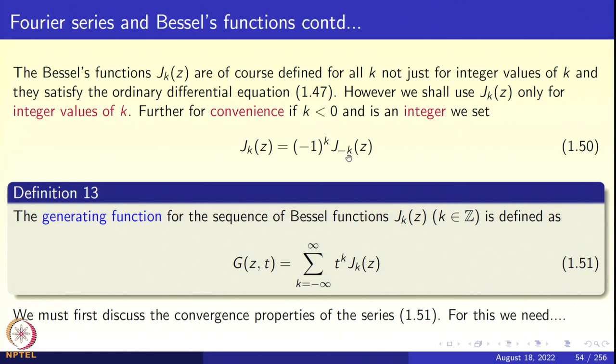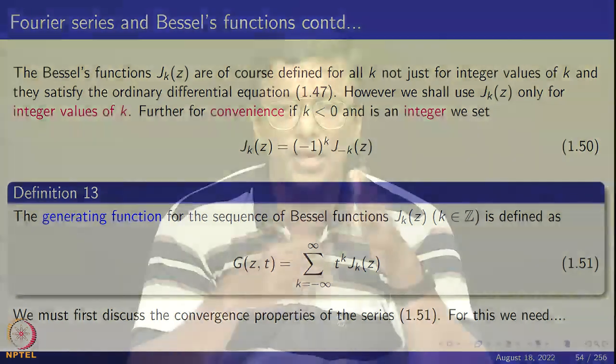When you are given any sequence, we encode the sequence into a generating function. You take a sequence A_0, A_1, A_2, A_3, and construct the power series A_0 + A_1*t + A_2*t^2, etc. This is called the generating function for the sequence. You may have heard about the Z transform, for instance.